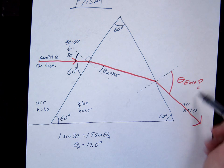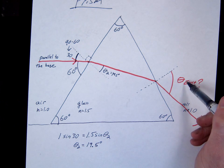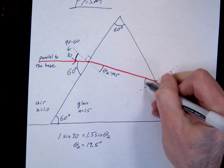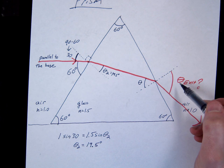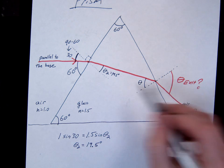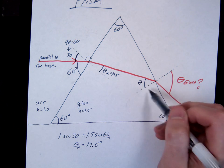Alright, ultimately we're looking for the theta exit. Well, notice if I can get to this angle, then I can do Snell's law again and get theta exit. Now what you cannot do is say that this is 19.5.